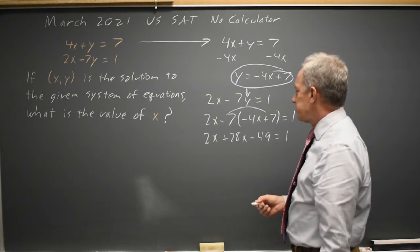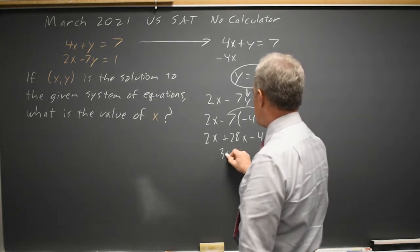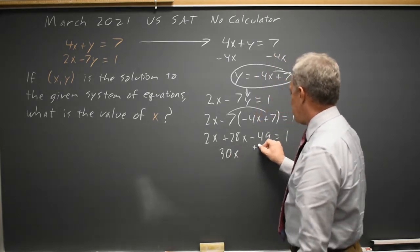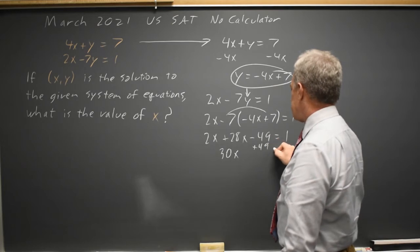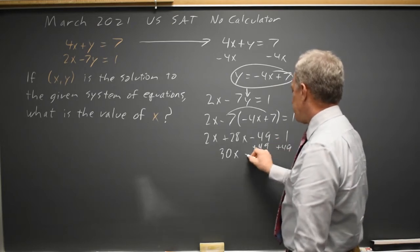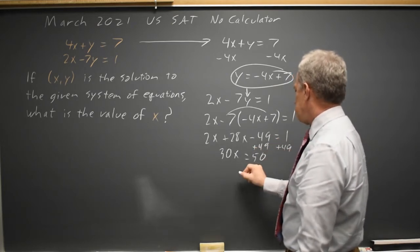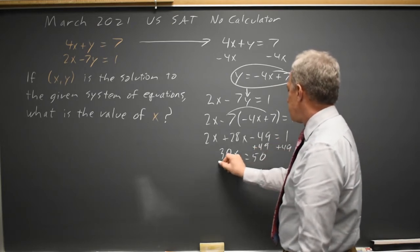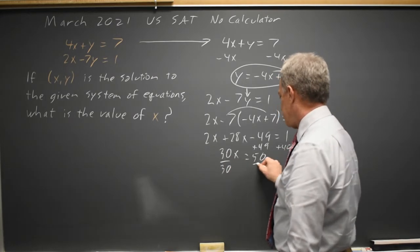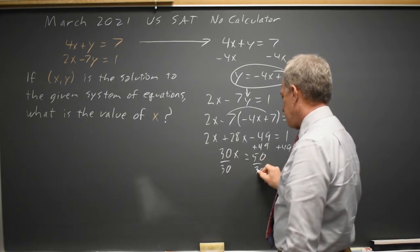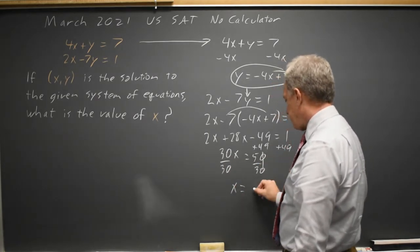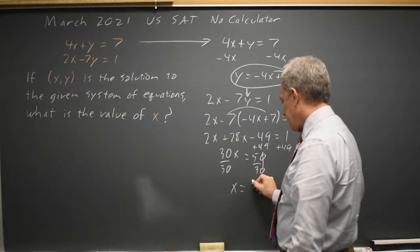2x plus 28x is 30x. Add 49 to both sides: 30x equals 50. Dividing both sides by 30, x equals 50 over 30, which is 5 over 3.